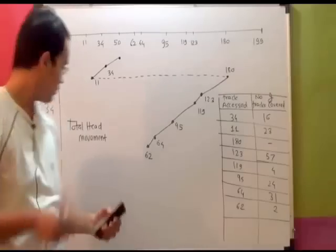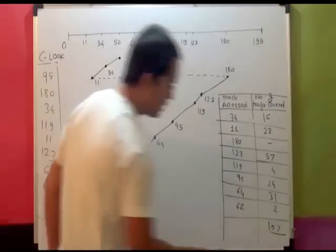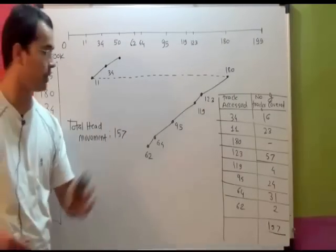So this is the end of the table. So what's the total head movement? The total head movement is 157.